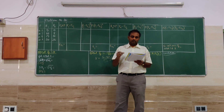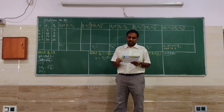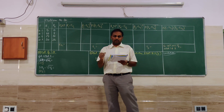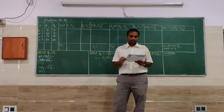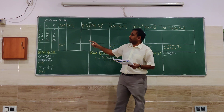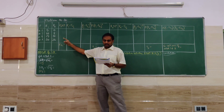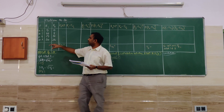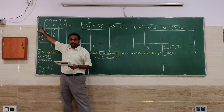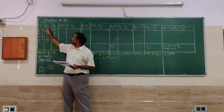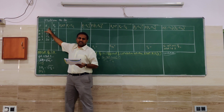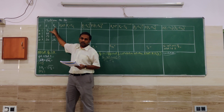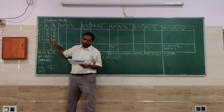The return of two assets under four possible states of nature are given below. Probabilities are given, return on asset 1 is given, return on asset 2 is given. Probability I have taken as P, return on the first asset I have taken as R1, and return on asset 2 I have taken as R2.